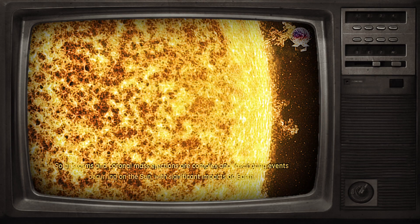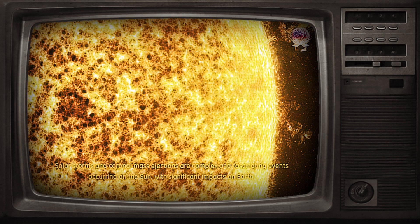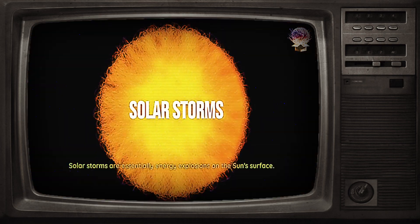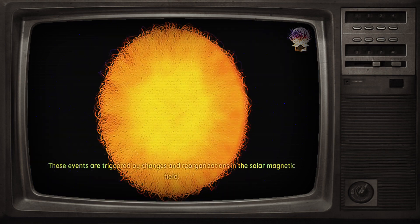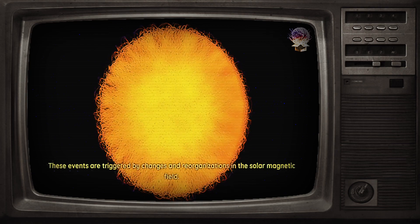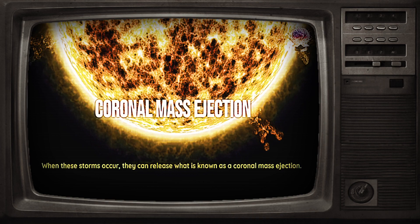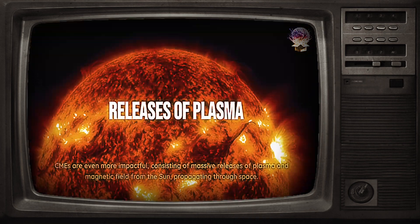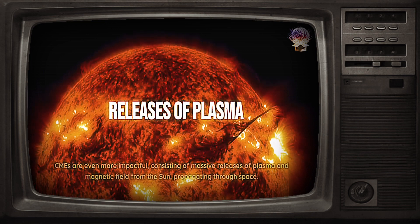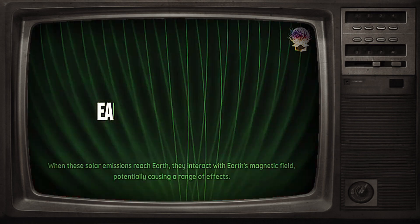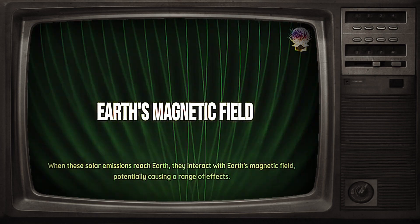Solar storms and coronal mass ejections are complex and fascinating events occurring on the sun, with significant impacts on Earth. Solar storms are essentially energy explosions on the sun's surface, releasing a massive amount of radiation and energetic particles. These events are triggered by changes and reorganizations in the solar magnetic field. When these storms occur, they can release what is known as a coronal mass ejection. CMEs are even more impactful, consisting of massive releases of plasma and magnetic field from the sun propagating through space. When these solar emissions reach Earth, they interact with Earth's magnetic field, potentially causing a range of effects.